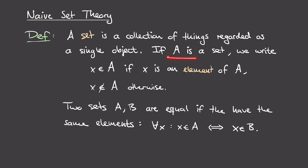Now if A is a set, then we adopt the following notation. We write x is an element of A using this element symbol, if the object x is contained in the collection A. On the other hand, if x does not belong to the collection A, then we write the element symbol with a strikethrough to express that x is not an element of the set A.